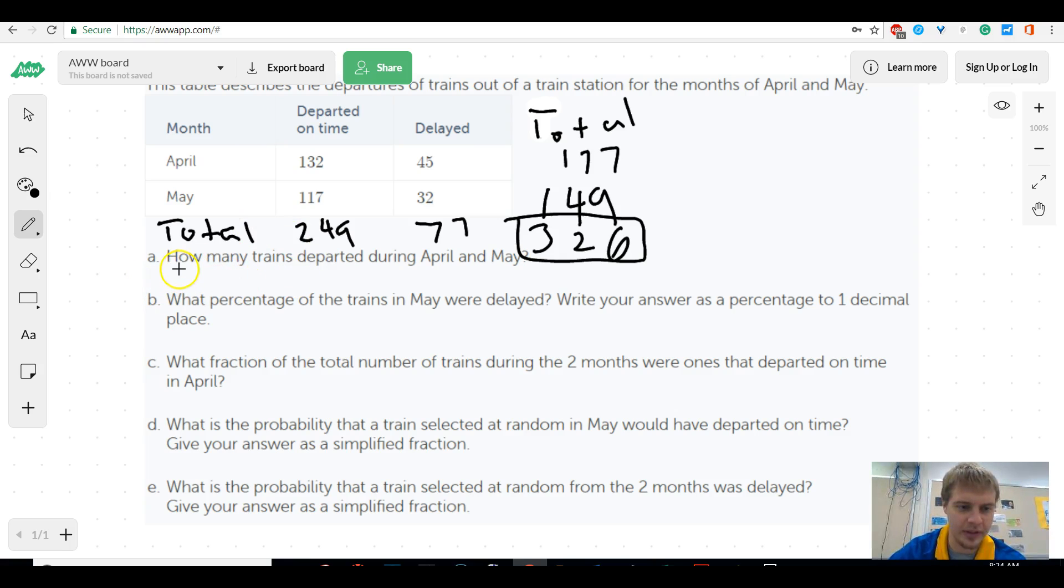So, then, they're going to ask questions like this. How many trains departed during April and May? Well, that's easy. Oh, departed. So, that would be all the trains, because these departed on time, these were delayed. So, all the trains, we already found that, 326. What percentage of trains were delayed in May? Well, there was 32 trains that were delayed, and there was 149 trains in May. So, 32 over 149. Notice how, in this question, I didn't put it over the total number, because they didn't care about the total number. They only cared about the trains in May. Just these trains.